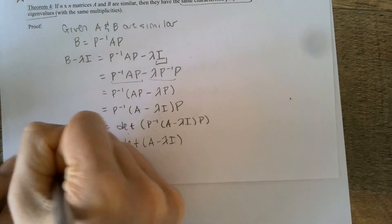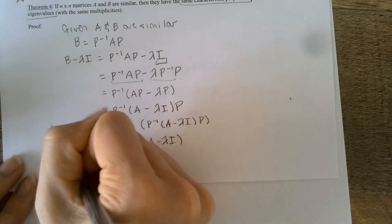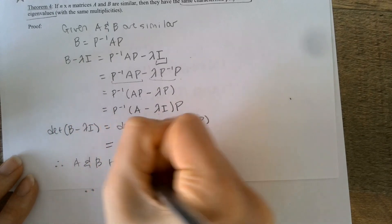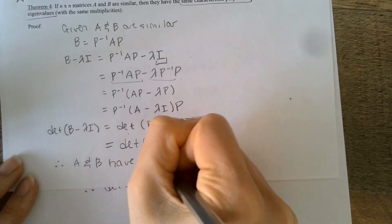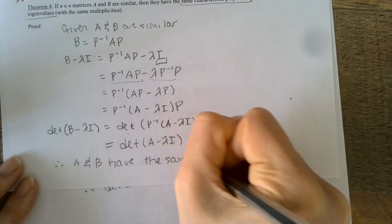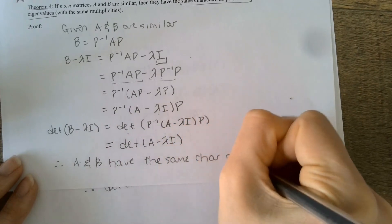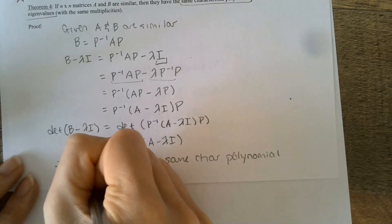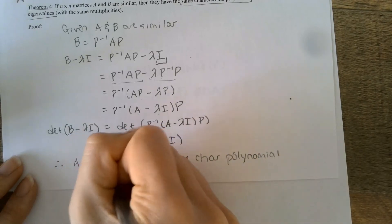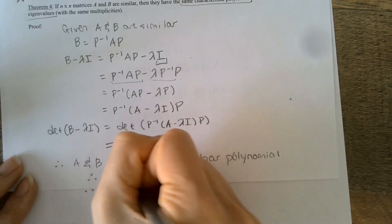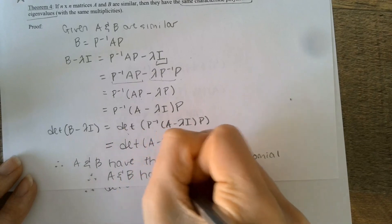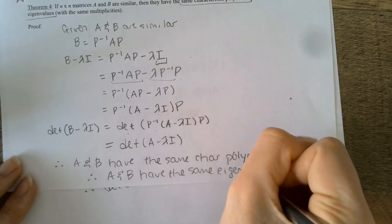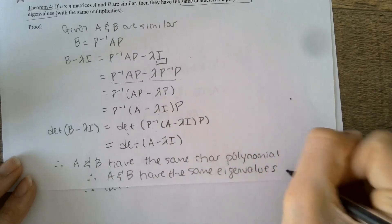Going back to the previous proof, we can split the determinant of P inverse (A minus lambda I) P into det(P inverse) times det(A minus lambda I) times det(P), rearrange, recombine P inverse and P into the identity, and conclude that det(B minus lambda I) equals det(A minus lambda I). This means A and B have the same characteristic polynomial, and therefore A and B have the same eigenvalues. QED.